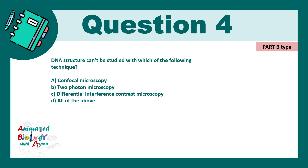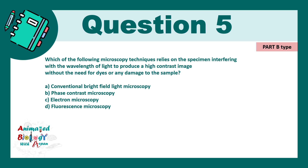Question 4: DNA structure can be studied with which of the following techniques? A) Confocal microscopy, B) Two-photon microscopy, C) Differential interference contrast microscopy, D) All of the above. As mentioned earlier, none of these light microscopy techniques can be utilized to understand the structure of any biomolecule, so obviously 'all of the above' — meaning none of these — is the correct answer.